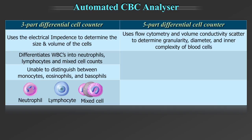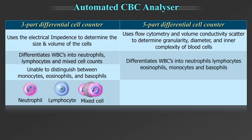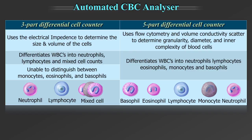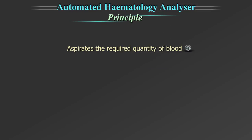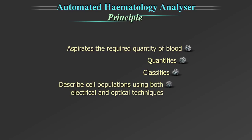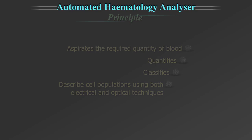The 5-part differential cell counter uses flow cytometry and volume conductivity scatter to determine the granularity, diameter, and inner complexity of blood cells. It differentiates white blood cells into neutrophils, lymphocytes, eosinophils, monocytes, and basophils. The automated CBC Analyzer aspirates the required quantity of blood, quantifies, classifies, and describes the cell population using both electrical and optical techniques.